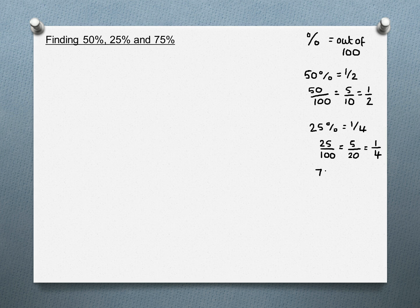And 75% is the same as three quarters. So 75 out of 100. 5 will go in: 5 into 75 goes 15 times, 5 into 100 goes 20. Cancel this down: 5 into 15 goes 3, 5 into 20 goes 4. So we now know that 50% is a half, 25% is a quarter, and 75% is the same as three quarters.